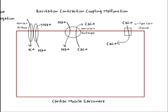In a cardiac muscle sarcomere there are several different transporters. On the far left is a sodium-potassium ATPase, which brings in potassium against its concentration gradient and exports sodium also against its concentration gradient. In the middle we have the sodium-calcium exchanger, which brings in sodium with its concentration gradient in exchange for calcium. On the far right we have the L-type calcium channel, which in response to neuronal activation brings in calcium.